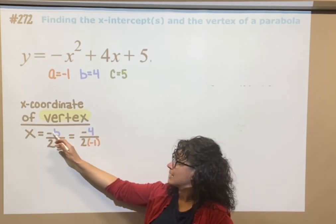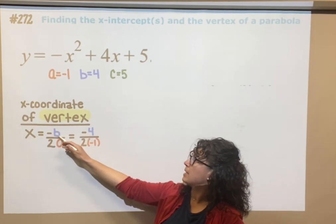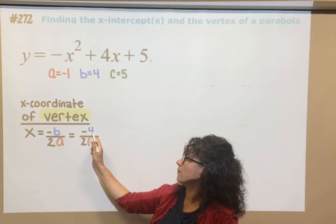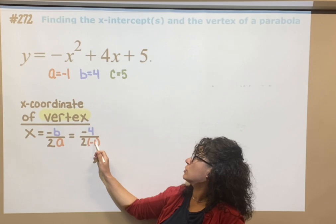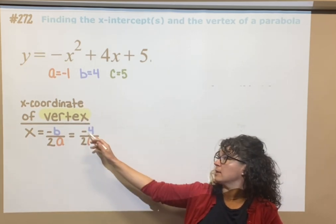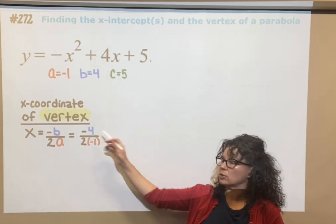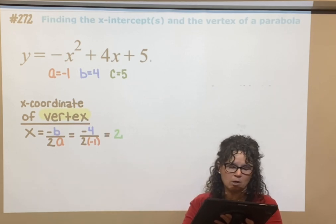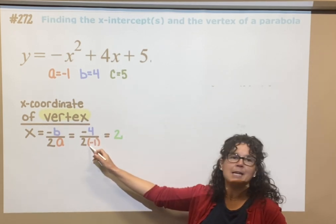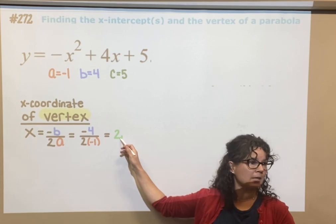So this negative is this negative. b is 4, and then 2 times a, 2 times negative 1. So 2 times negative 1 is negative 2. So we have negative 4 divided by negative 2, which is positive 2.